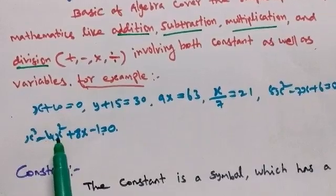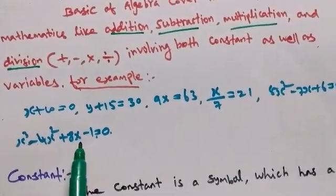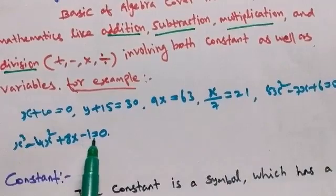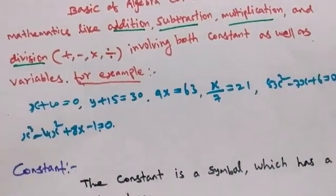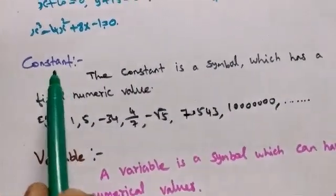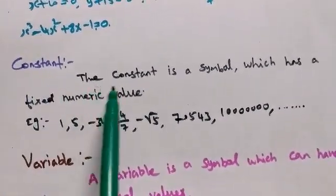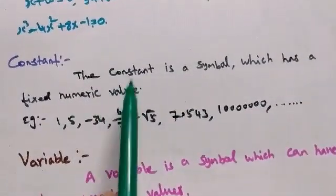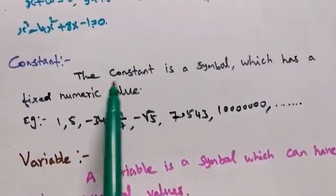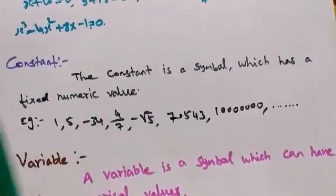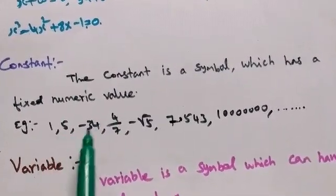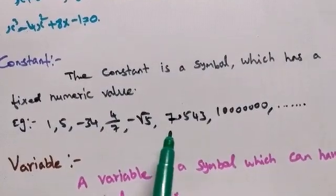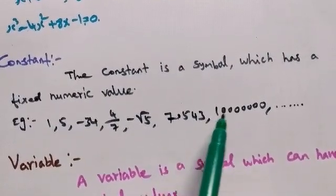We are going to talk about the constant. What is the constant? A constant is a symbol which has a fixed numerical value. For example, constants include: 1, 5, minus 34, 4 by 7, minus 4 by 5, 7.543, and similar fixed values.